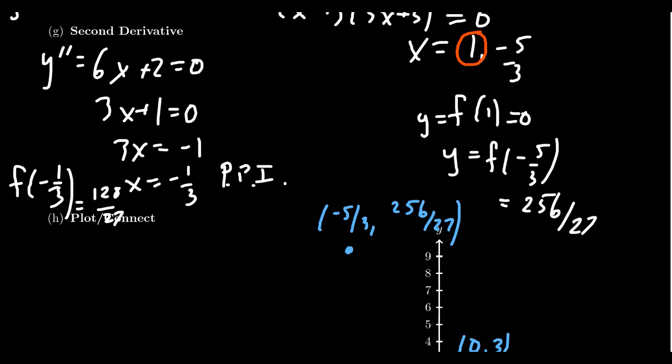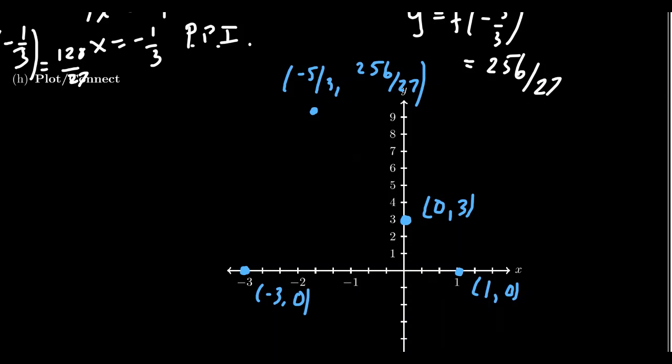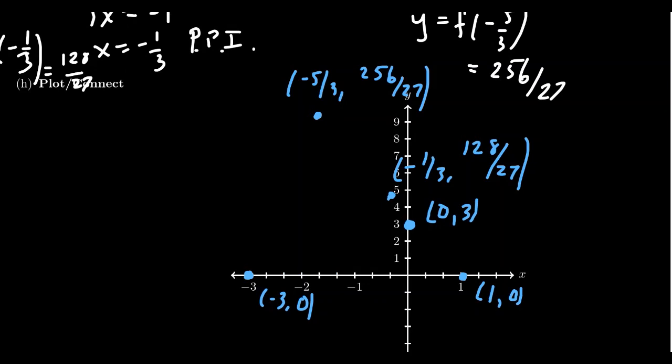And we can graph that below. Negative 1/3 is going to be to the left of the x-axis. And 128/27, that's just a little bit less than 5. So we get a point about right here. All right. And also feel free to label it: (-1/3, 128/27).